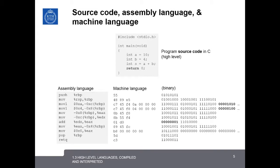As we now know, high-level languages must be translated or compiled into machine instructions to run on the computer hardware. Here we can see the source code for a simple C program to add two integers, 10 and 4.